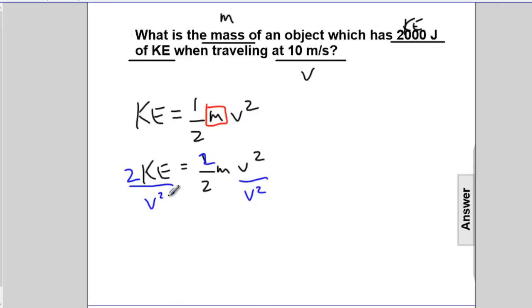Whatever I do on one side, I'll do on the other. So 2 will cancel 2. V² cancels v². We will rewrite. m will be equal to 2KE over v².